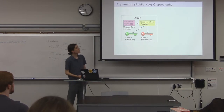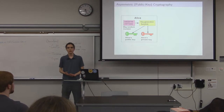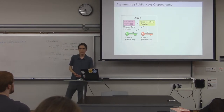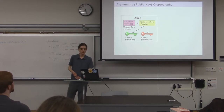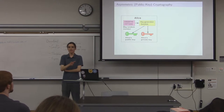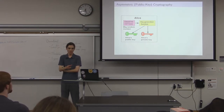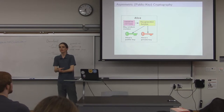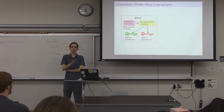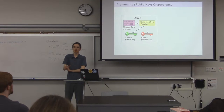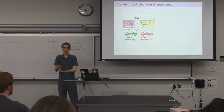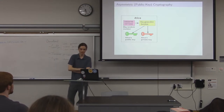Now we introduce public key cryptography. Instead of a key being a random value, we generate two related keys called the public key and the private key. These have structure to them: given the public key encryption algorithms, any operation performed with one key can't be reversed by others who have that same key — but it can be reversed by the other key.